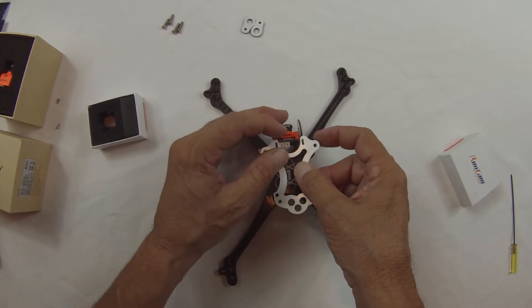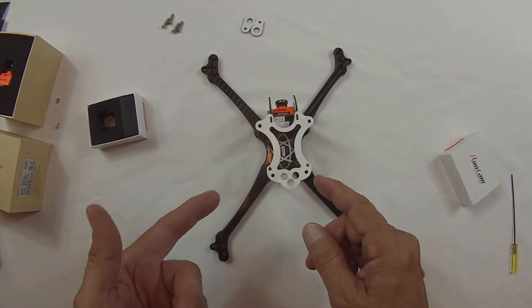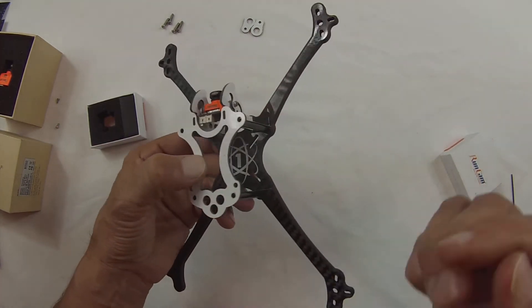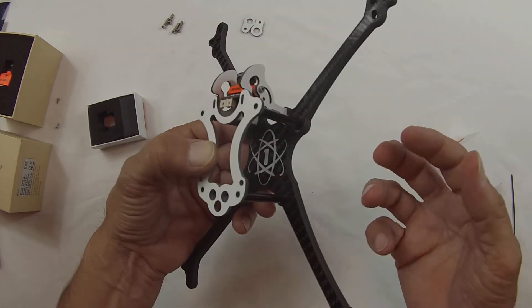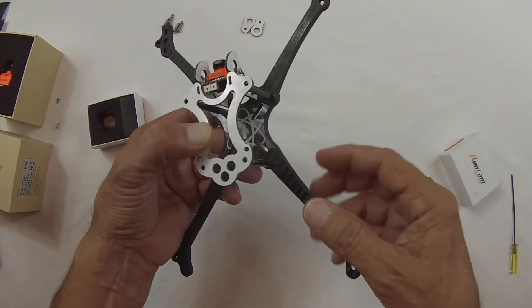And this top plate goes like so. Now the top plate is made out of G10. Which G10 does not conduct electricity as carbon fiber. Sometimes a screw can bottom out on a motor or something can bottom out, ground out.